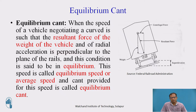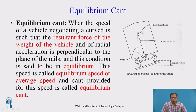The first cant is equilibrium cant. When the speed of a vehicle negotiating a curve is such that the resultant force — due to the centrifugal force and the weight of the vehicle acting downward — is perpendicular to the plane of the rails, this condition is satisfied by raising the superelevation so that the load is equally distributed on both rails. Whatever superelevation is required to achieve this is called equilibrium cant, and the speed considered to derive it is called equilibrium speed.